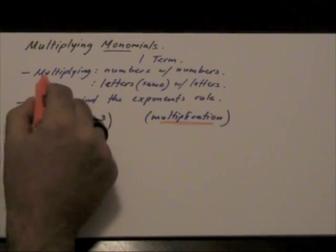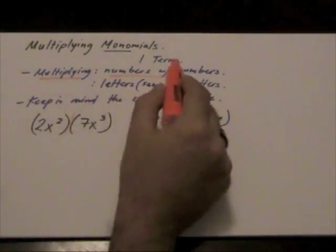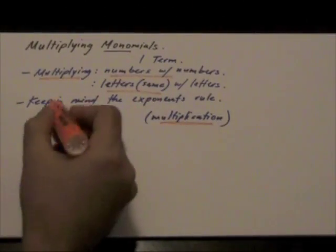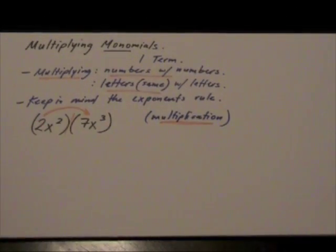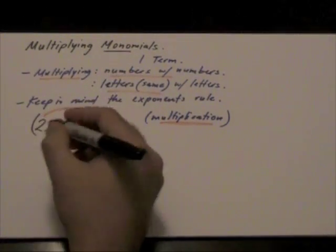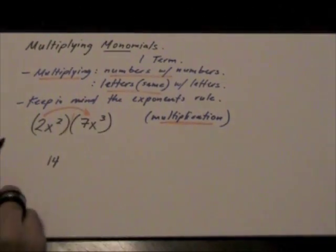Now, if we look at what we said, the first rule, multiplying numbers with numbers, letters with letters. So the numbers are going to be multiplied together. And when we multiply the two numbers together, we are going to get 14.